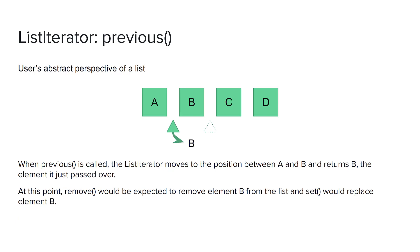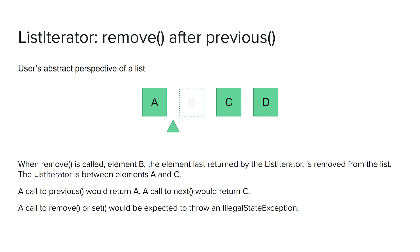Assuming we called previous from the original position, the iterator would move backward to the position between A and B and return element B. At this point, a call to set would replace element B with a new value, and a call to remove would remove B from the list such that the iterator is now after A and before C. Here we've called remove after previous returned element B, so B has been removed and the iterator is now positioned between elements A and C.